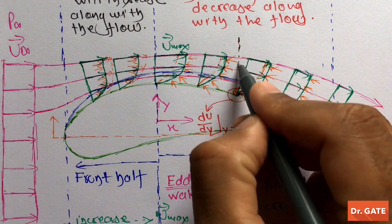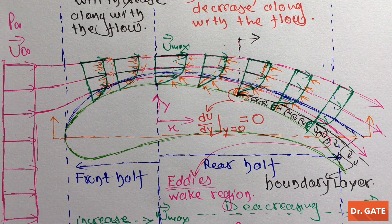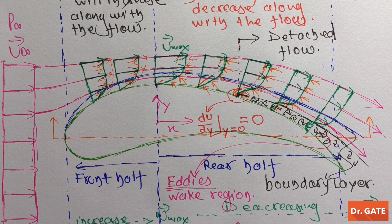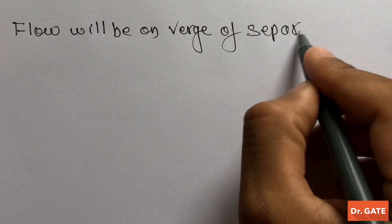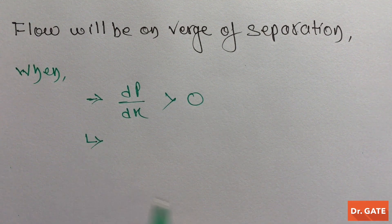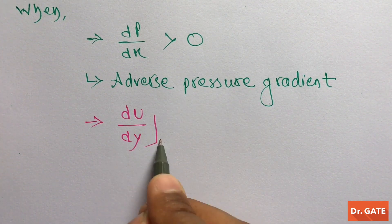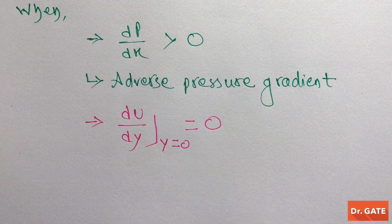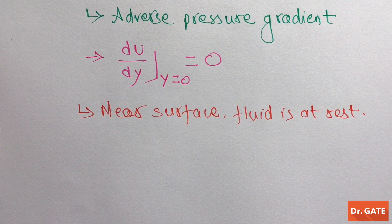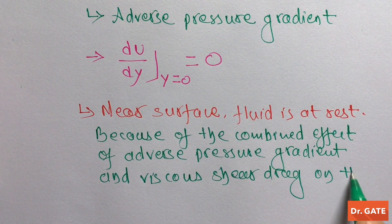From this point onward, flow is separated from the surface of the aerofoil, so the flow from this point onward is known as detached flow. Flow separation occurs when dp/dx is greater than 0 — that is, there is an adverse pressure gradient — and also du/dy at y=0 equals 0, meaning near the surface the fluid is at rest, due to the combined effect of adverse pressure gradient and viscous shear drag in the boundary layer.